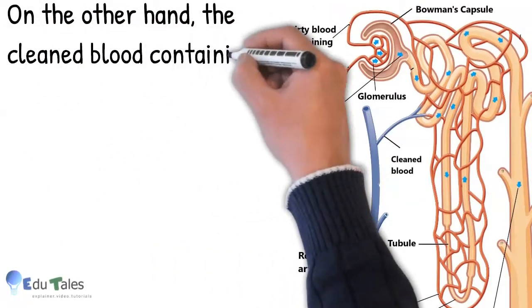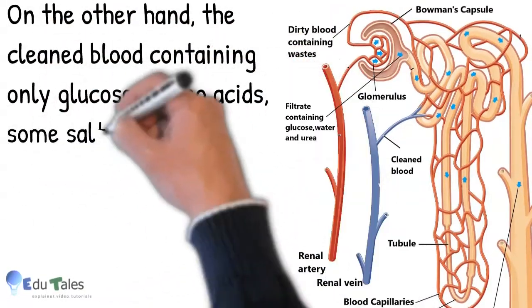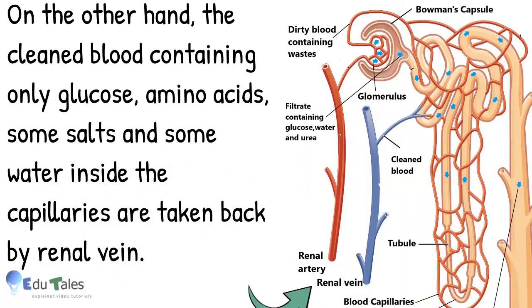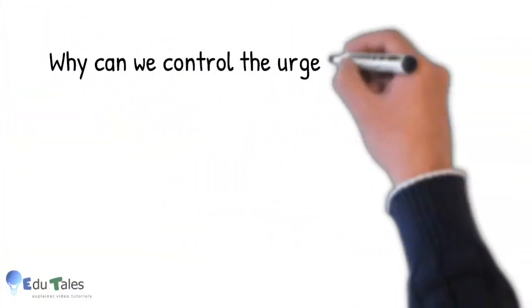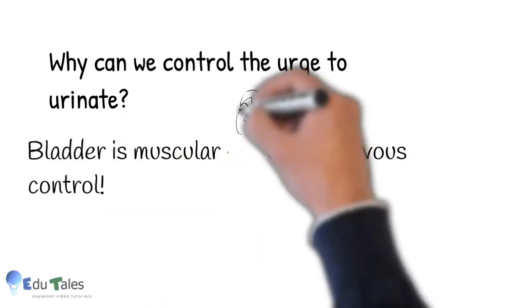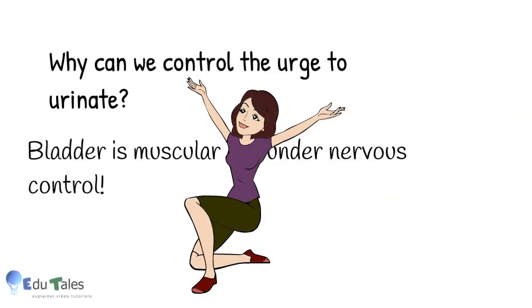On the other hand, the cleaned blood containing only glucose, amino acids, some salts, and some water inside the capillaries are taken back by renal vein. There might be a question as to why can we control the urge to urinate. As bladder is muscular, it is under nervous control, so we can control the urge to urinate. Here excretion in human beings is completed.